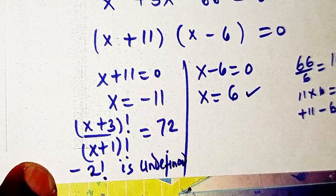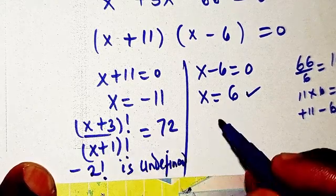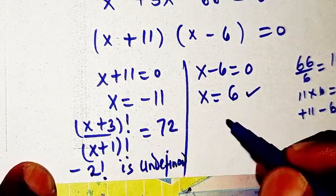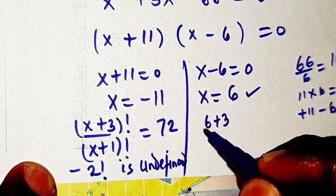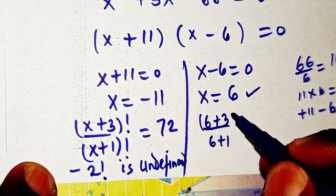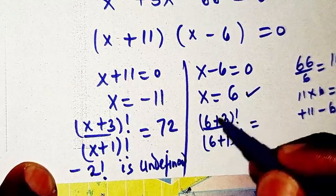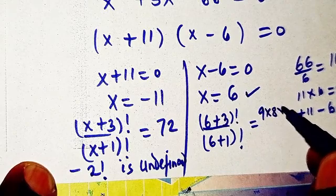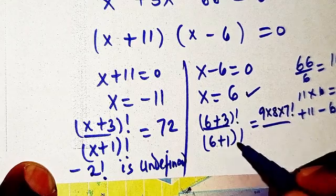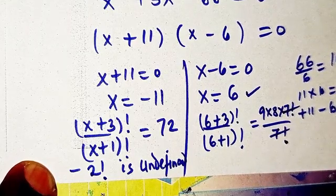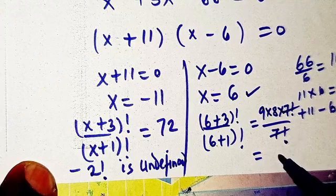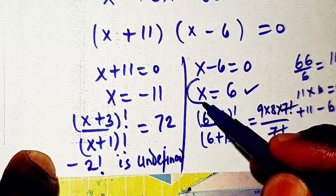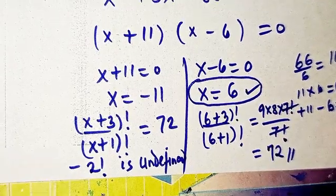Now checking x equals 6: we have 6 plus 3 factorial over 6 plus 1 factorial, which is 9 factorial over 7 factorial. We can expand 9 factorial as 9 times 8 times 7 factorial, divided by 7 factorial. The 7 factorials cancel, leaving 9 times 8, which equals 72. This confirms x equals 6 is the valid solution.